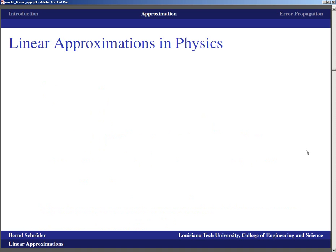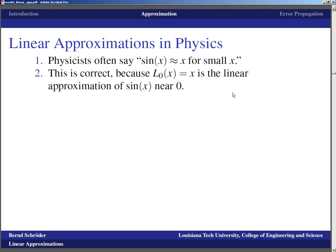Linear approximations are being used in physics when, for example, a complicated equation could be solvable if only a certain term was simpler. Physicists very often say that the sine of x is approximately equal to x for small x. That is correct and very reasonable because the linear approximation near zero of the sine function is the function f(x) equals x. That's because the first derivative of the sine is the cosine, which is one at zero, and it goes through zero, so this straight line is just x.